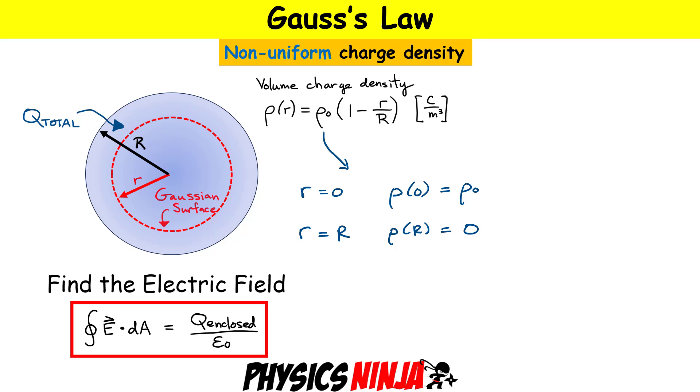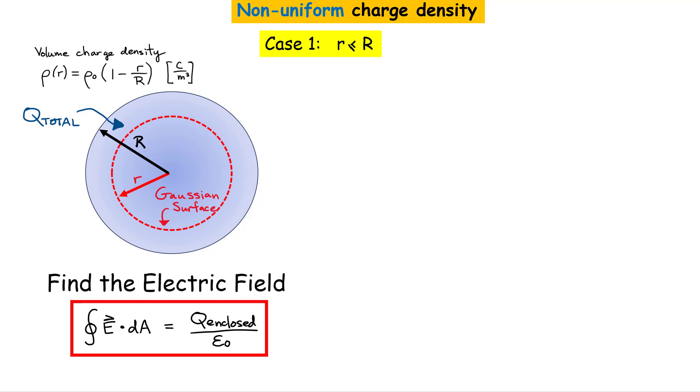Another thing I want to mention about this problem here is that the total charge inside the sphere is given by Q_total. So later on, we're going to see there's going to be a relationship between this constant, ρ₀, and the total charge. The first thing we do then is we're considering case one where r is less than the radius of the sphere. So what you do is you place a Gaussian surface, in this case, a spherically symmetric Gaussian surface, and it has a radius r.